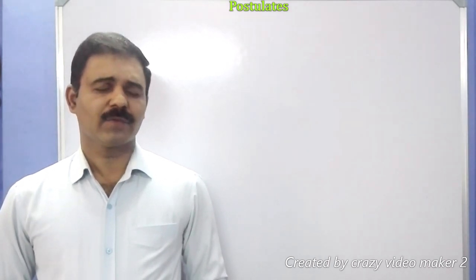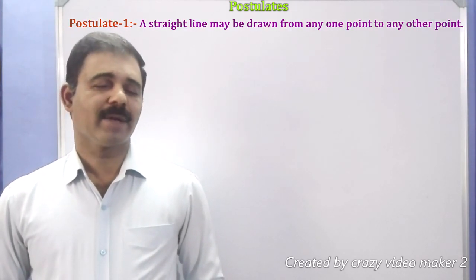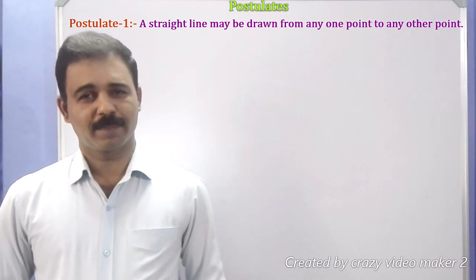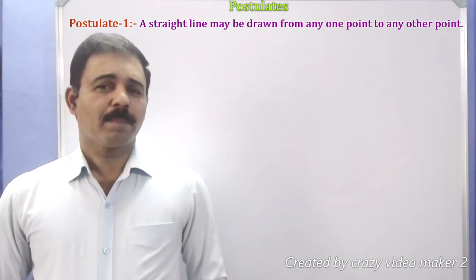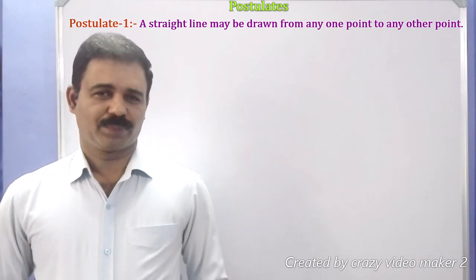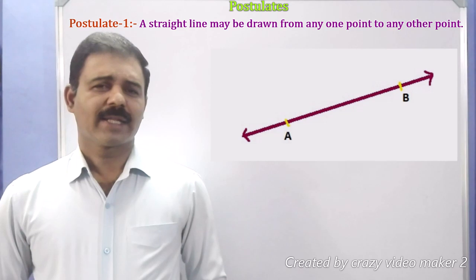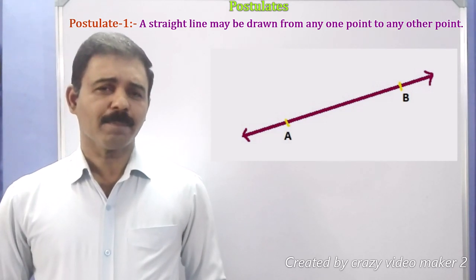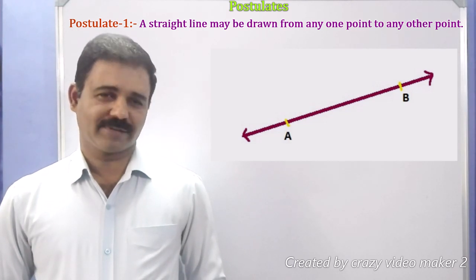Postulate is applicable to geometry only, but axioms are applicable to geometry and all the branches of mathematics and science also. In this class we discuss Euclid's 5 postulates. Postulate 1 states that a straight line may be drawn from any one point to any other point. Whenever A and B are two given points, there is a straight line passing through points A and B.